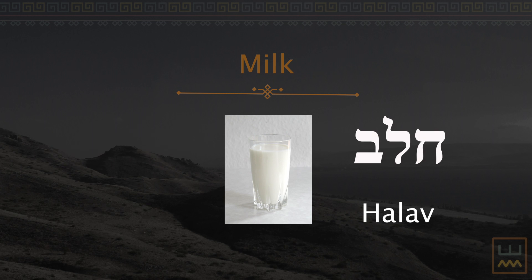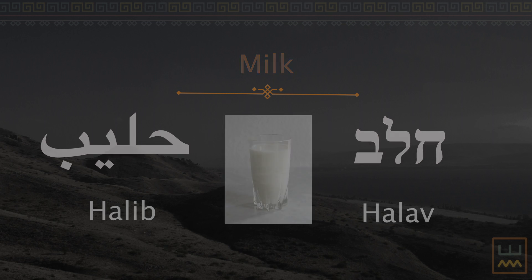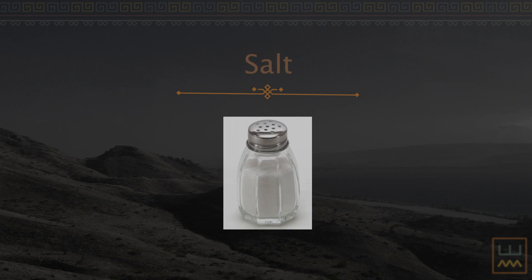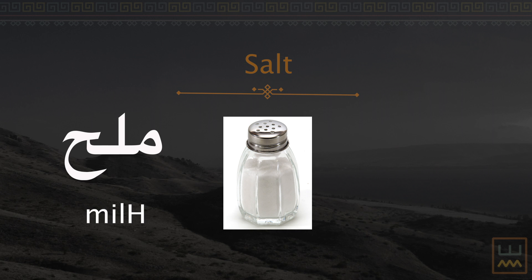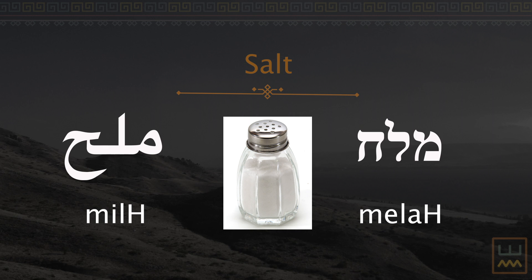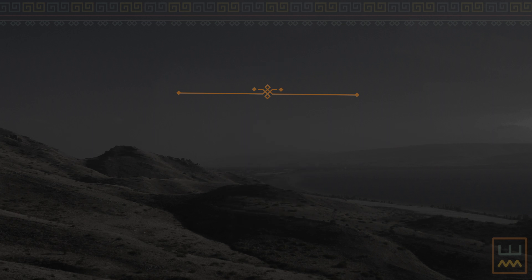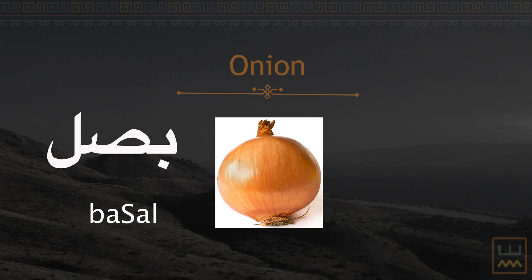Milk: chalib (Arabic). Salt: Malach (Hebrew), milch (Arabic). Onion: Bacal (Hebrew), basal (Arabic).